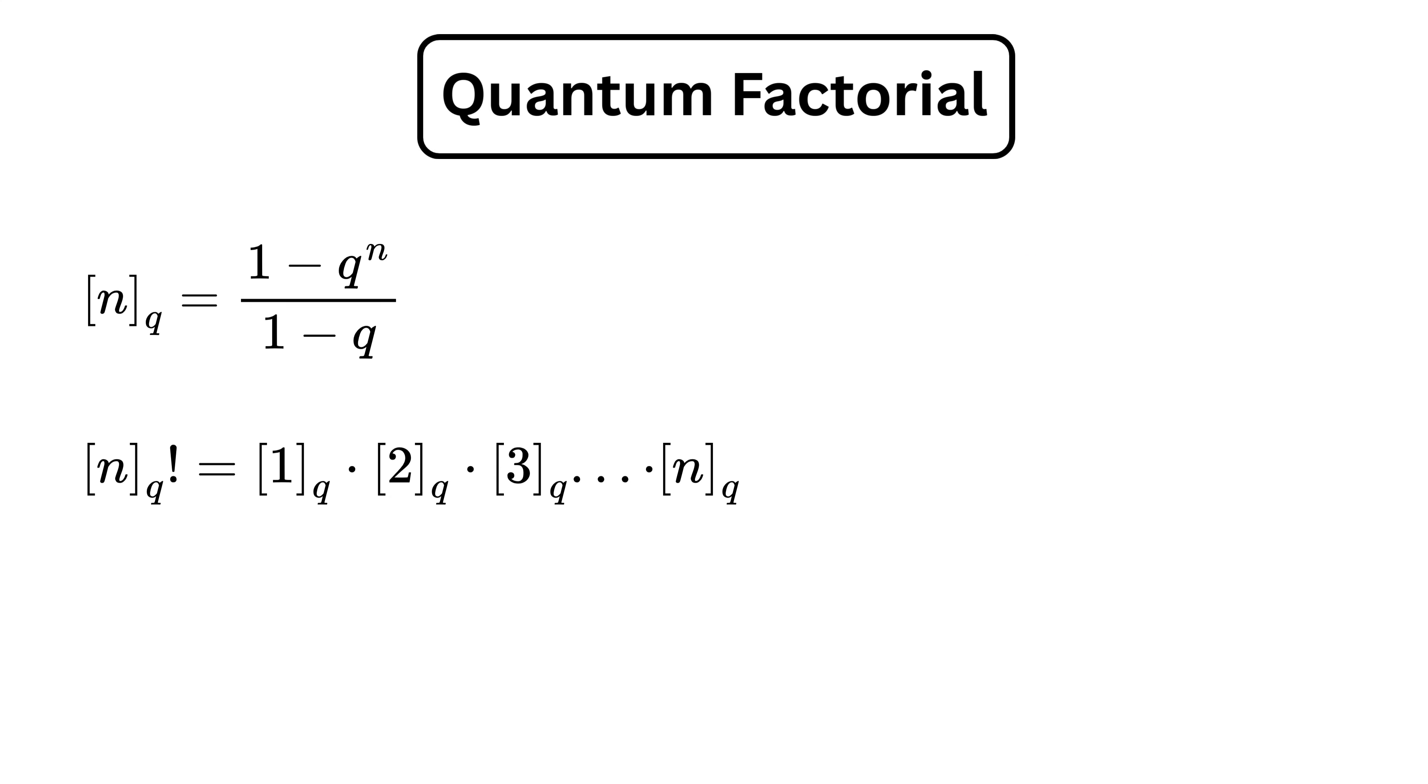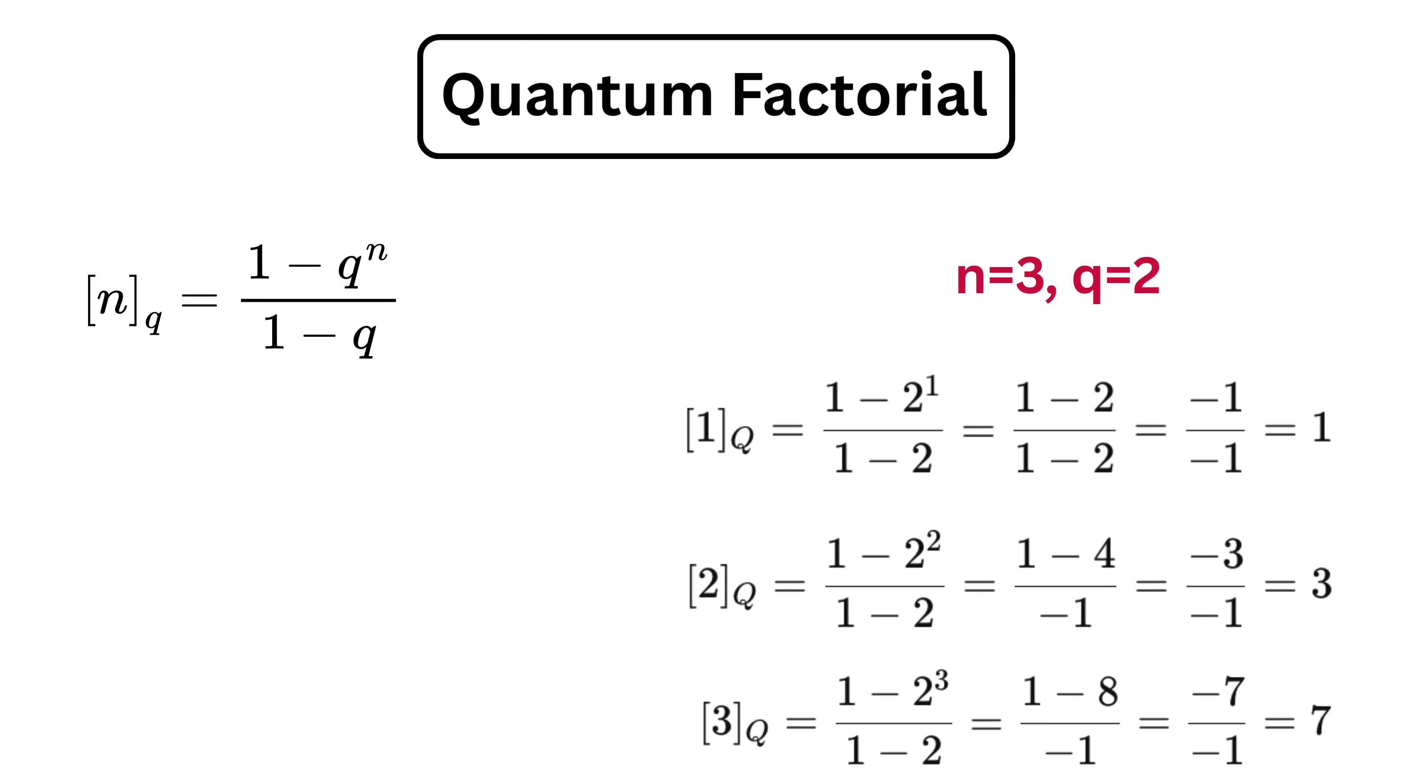For example, if n is 3 and q is 2, then open bracket 1, close bracket q is 1, open bracket 2, close bracket q is 3, and open bracket 3, close bracket q is 7.